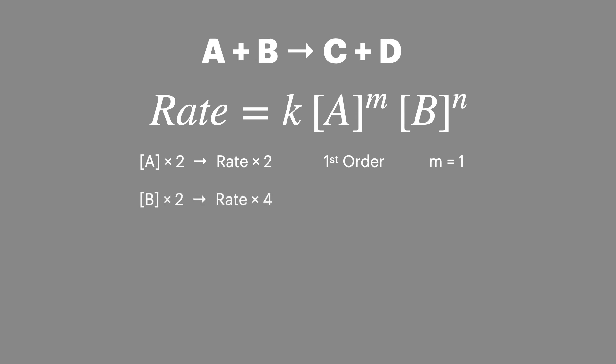If we then doubled B and the rate went up four times we'd then say that B would be second order and we'd set n to the value of two which would give us this rate equation.